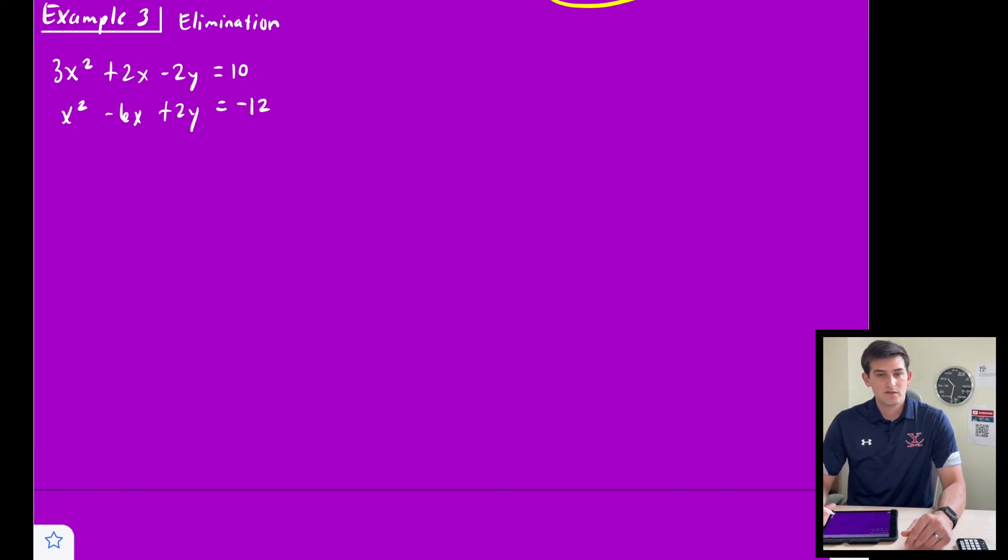Now we're looking for opposites or same coefficients. So we can add or subtract. I noticed here that we have a 2y and a -2y. So I'm going to go ahead and add these two equations and that's going to eliminate my y variable.